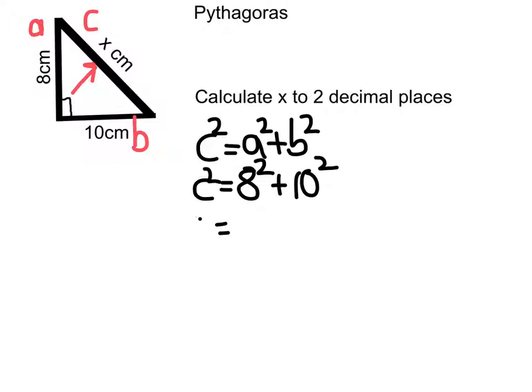Then we do the squaring. So squaring means times by itself. So 8 times 8, that's 64. Obviously we would do this on a calculator. 10 times 10 is 100. So overall we get 164.